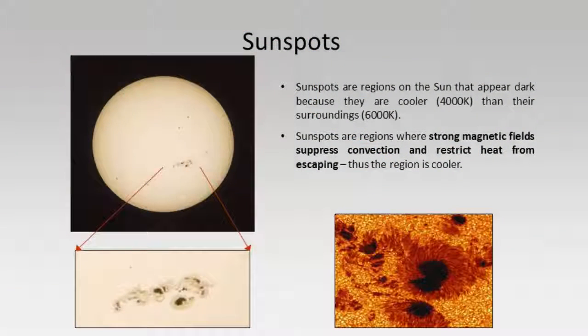Why are sunspots cooler? They are cooler because these are regions where the Sun's magnetic field is somewhat concentrated. When concentrated, that tends to restrict or suppress the light from escaping, so we don't see as much light and the region appears somewhat darker. Sunspots tend to come and go over time — sometimes more, sometimes fewer — and they traverse certain regions of the Sun. Technically, sunspots are merely one aspect of the activity on the Sun's surface.